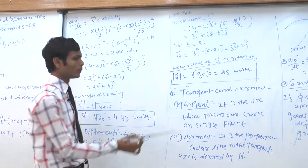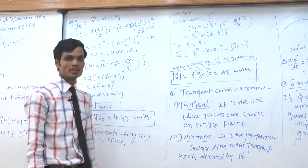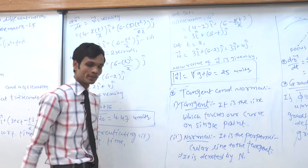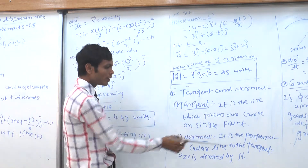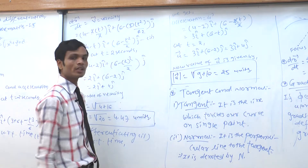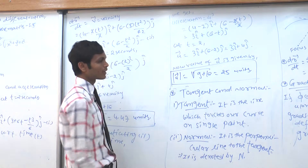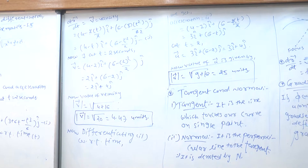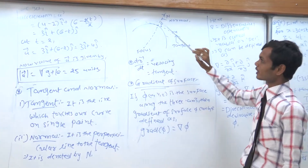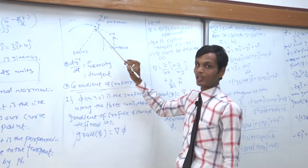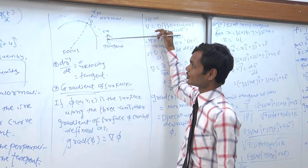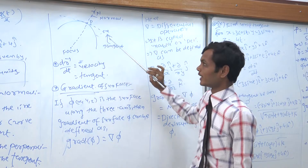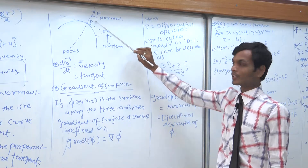Now we come to the second point: tangent and normal. What is the tangent? It is the line which touches our curve at a single point. What is the normal? It is a line perpendicular to the tangent, and normal is represented by capital N. From a point on the curve, we draw one perpendicular line to the tangent to get the normal.